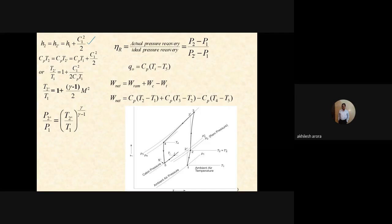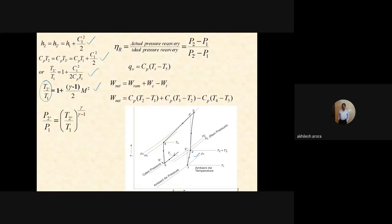A compiled slide summarizes all equations: process 1→2 energy equation, temperature ratio in specific heat terms, stagnation temperature T2-dash, stagnation pressure using the isentropic relation, ram efficiency as actual over ideal pressure recovery, cooling effect, and the net work expression.